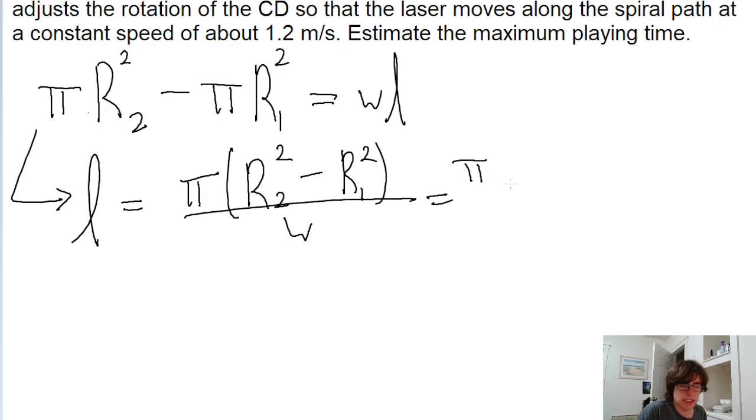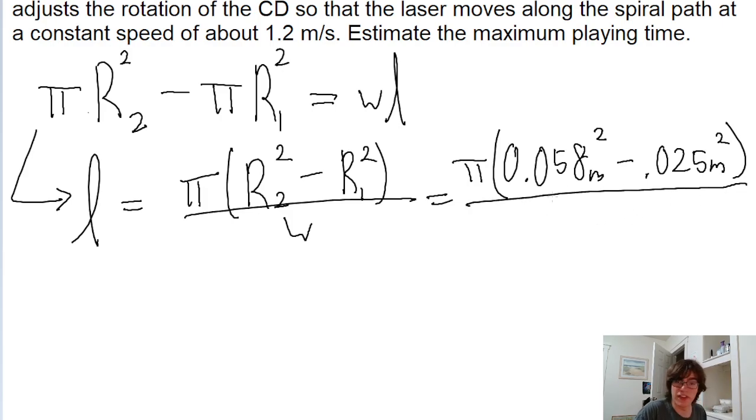pi times the radius of 5.8 centimeters, or 0.058 meters squared, minus the radius of 2.5 centimeters, or 0.025 meters squared, all divided by the width of 1.6 micrometers, so 1.6 times 10 to the power of negative 6 meters.